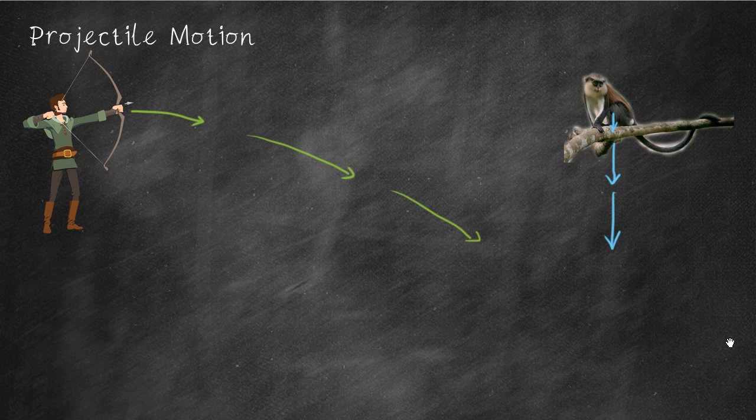Another period of time passes, and the arrow has moved the same distance in the horizontal plane. And now it's moved even more in the vertical plane. Its vertical velocity is even greater. The monkey still has no horizontal velocity. It has the same vertical velocity.